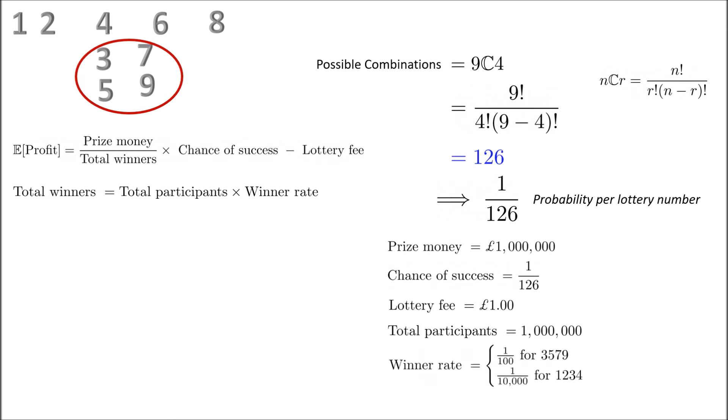And the winner rate is 1 in 100 for selecting the four digits 3579 and 1 in 10,000 for 1234. So it is clear that selecting 1234 is a lot rarer for people than choosing 3579.